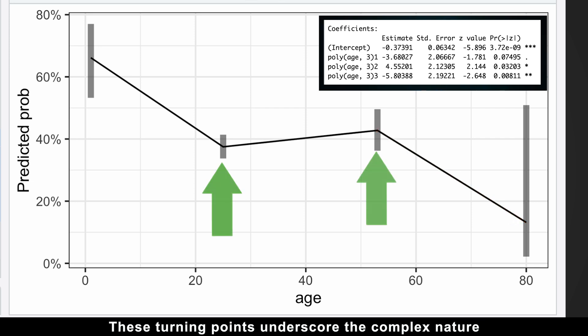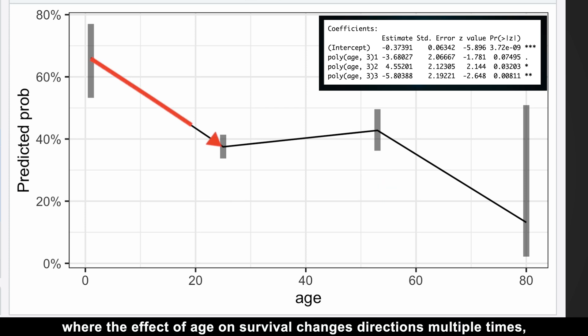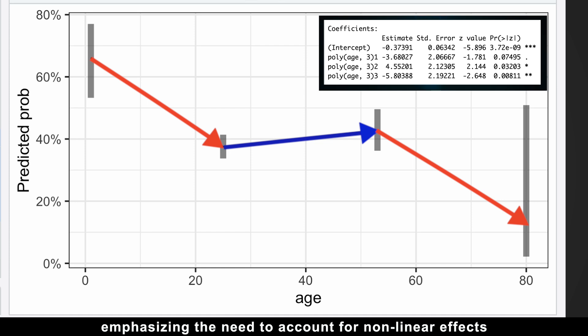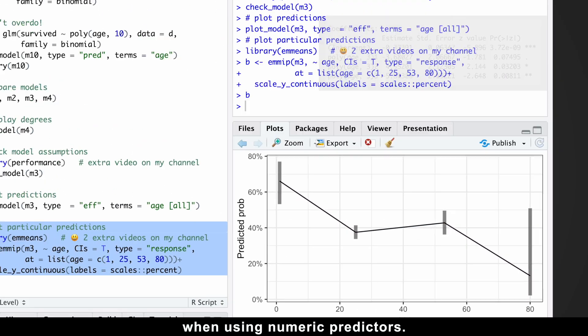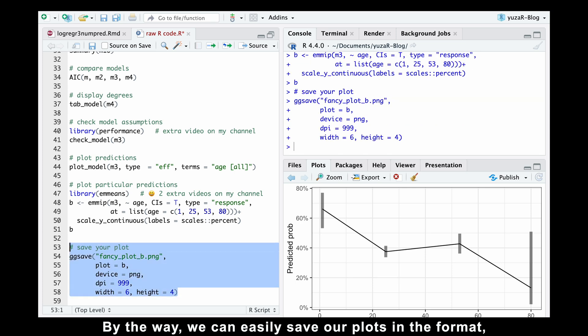The second turning point is evident in the significant positive second order term and the subsequent negative third order term. This indicates another turning point in the age-survival relationship, with survival rates decreasing again after the age of 53. These turning points underscore the complex nature of age-survival relationship where the effect of age on survival changes directions multiple times, emphasizing the need to account for nonlinear effects when using numeric predictors. By the way, we can easily save our plot in the format, quality, and size we need for our publication.